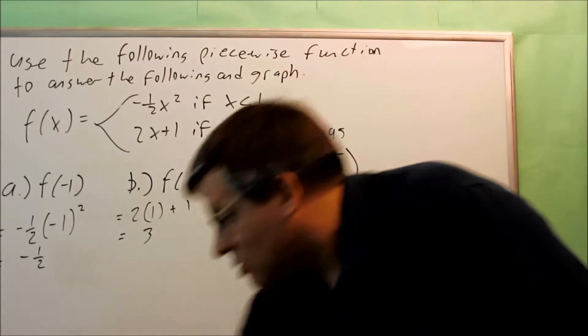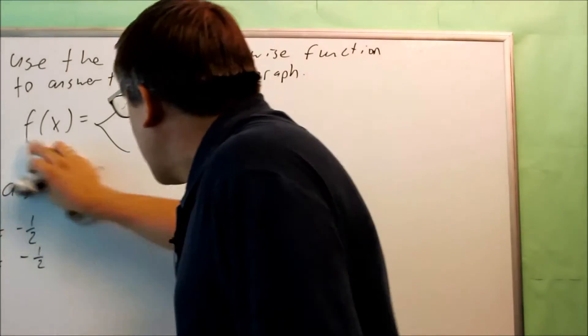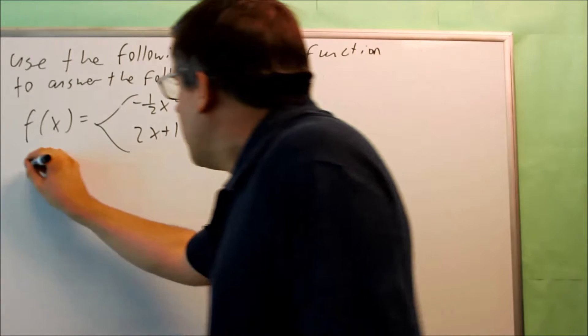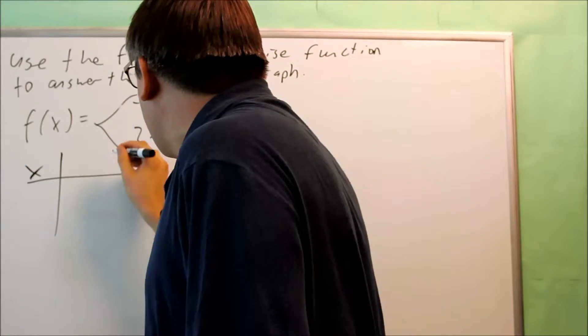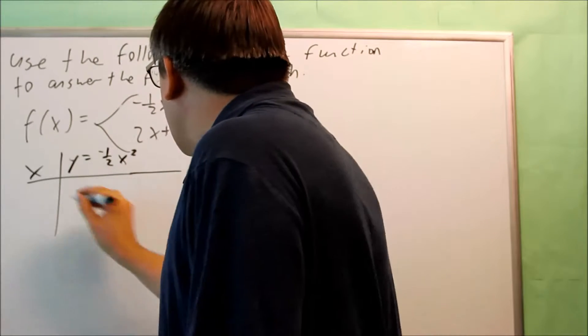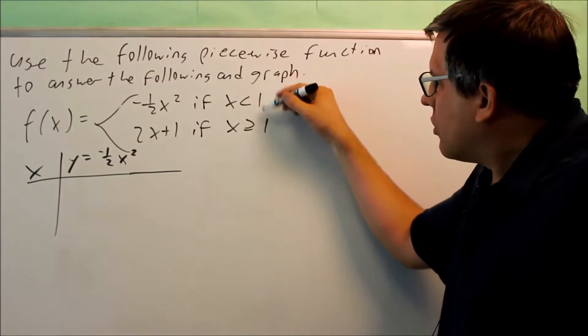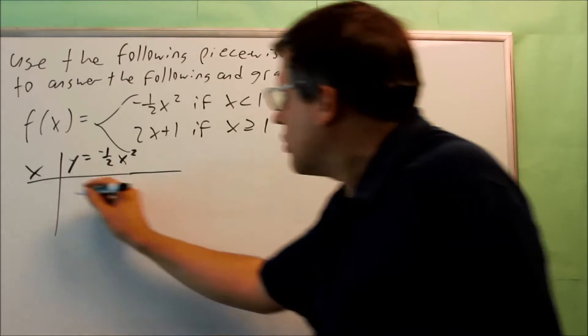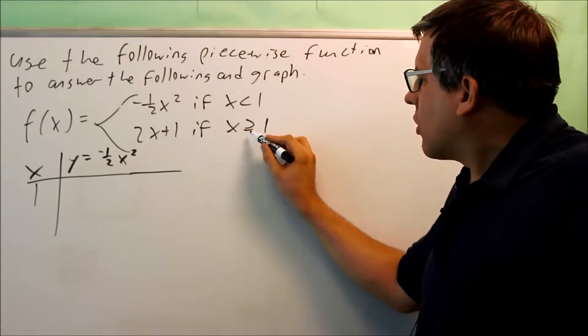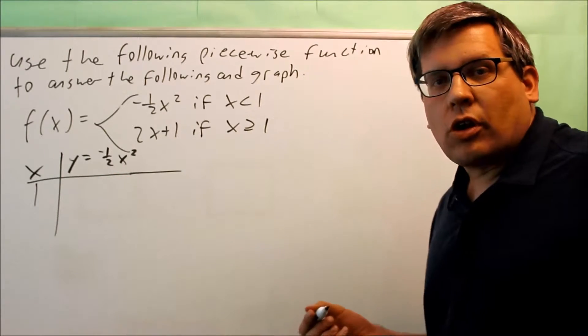Now we're ready to do a graph on this. Like last time, when you're doing a graph, you want to get a table. Because we have a square, this time you want to get at least three points to use. The first point that you always want to do is the point that's here on your condition. So the condition is your 1. It doesn't matter if that's included or not, you still want to use it. That'll be an open circle on our graph.